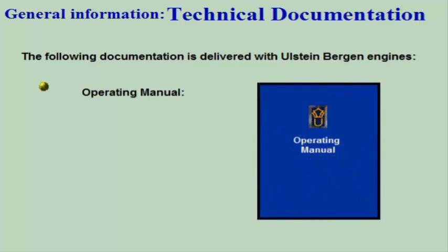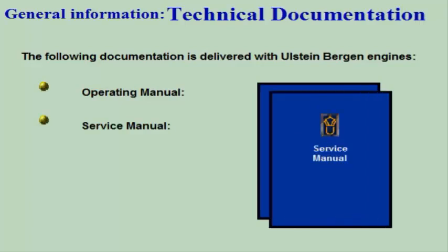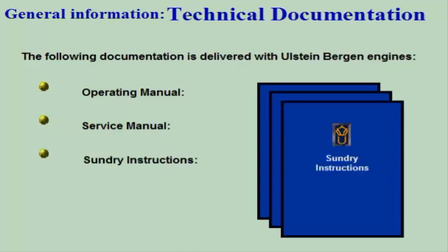One graphic is used to point out specifically important details or variations that should be noticed. The following documentation is delivered with Ullstein Bergen engines: the Operating Manual, which describes the day-to-day operation and maintenance of the engine; the Service Manual, which contains technical specifications and descriptions of extensive maintenance work; Sundry Instructions, which contain documentation from our subcontractors; and Electronic Interactive Documentation.